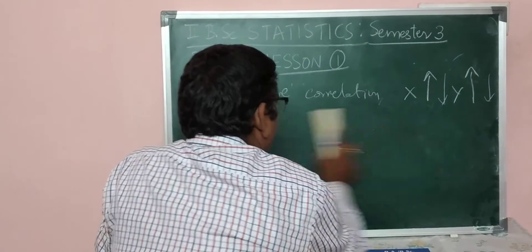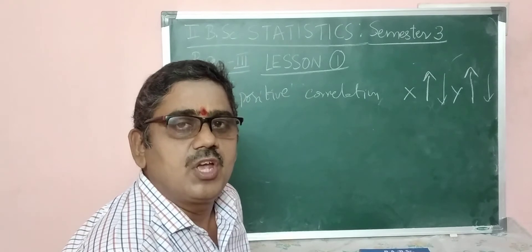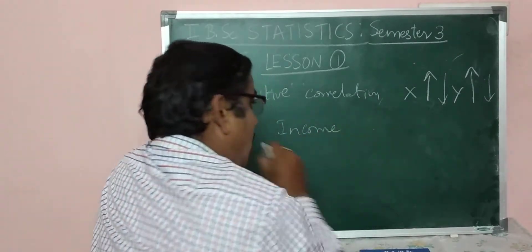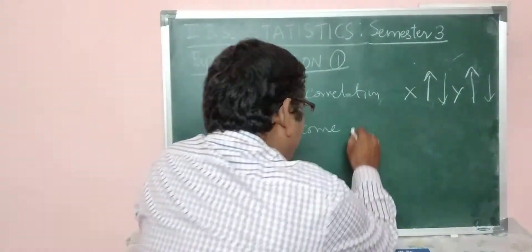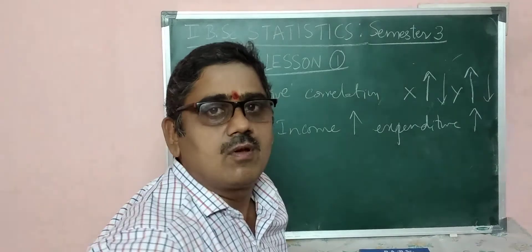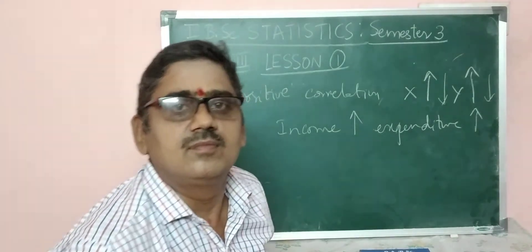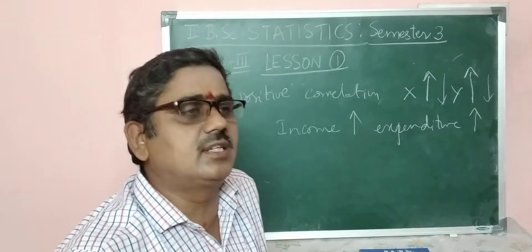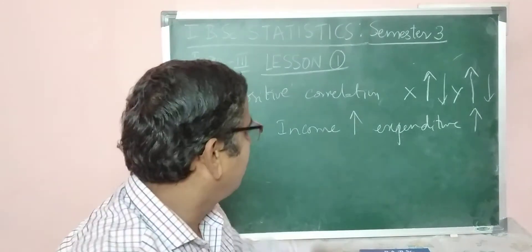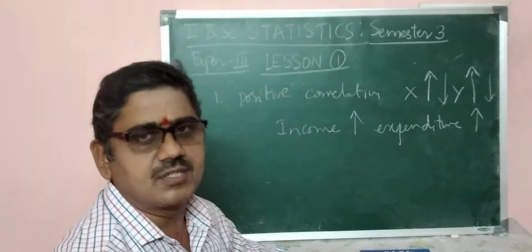Consider the example of income and expenditure of a group of families. If income of a family increases, automatically expenditure also increases. Vice versa, if income decreases, expenditure must decrease — there is no other way, economically and practically speaking. So if income increases, expenditure also increases. This is one example of positive correlation.